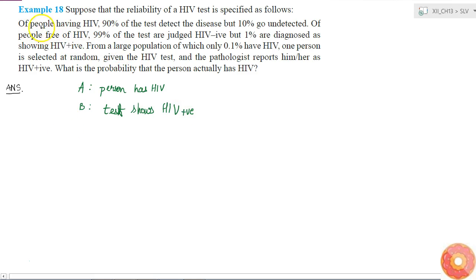The first statement tells of people having HIV, 90% of the test detect the disease. This means that probability of B given A is equal to 90%, which is equal to 0.9.